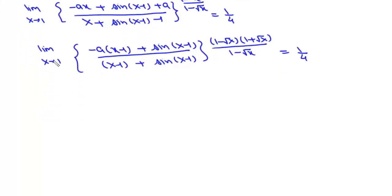Now since x tends to 1 and x is not equal to 1, within the bracket we will divide everything with x minus 1, and in the power we will cancel 1 minus root x. So now we can write this as limit x tends to 1 of minus A plus sin(x minus 1) upon (x minus 1), in the denominator 1 plus sin(x minus 1) upon (x minus 1), and if we cancel 1 minus root x we get 1 plus root x, and this equals 1/4.